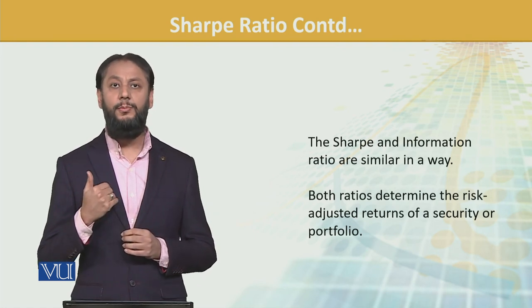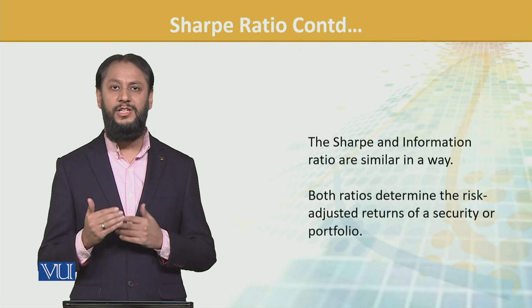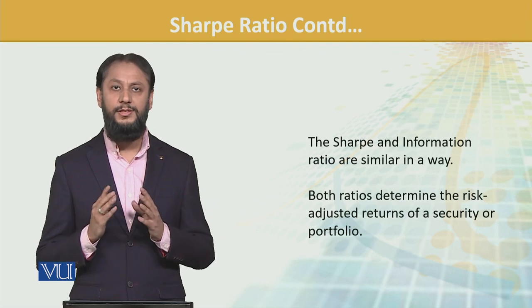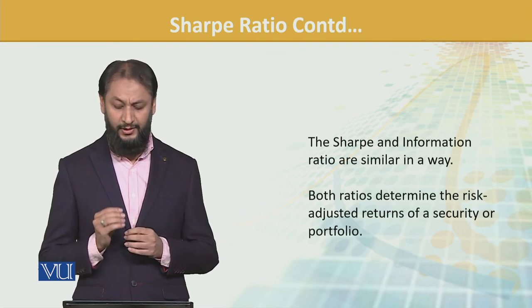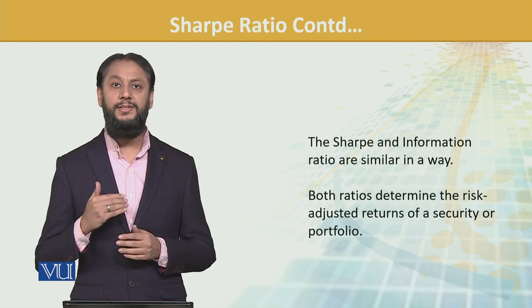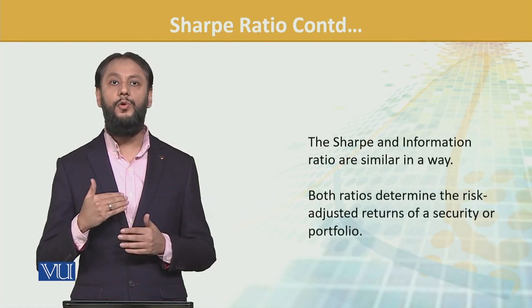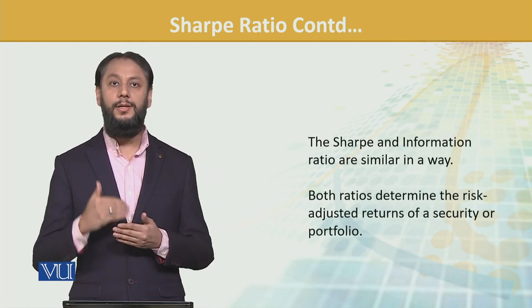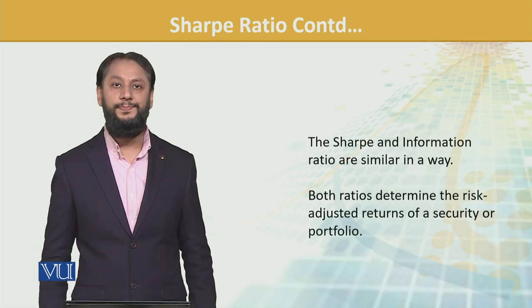Information ratio — हमने एक और जगह भी पढ़ी है, उसकी भी दोनों में similarity है. Both determine risk-adjusted return — मक्सद दोनों का risk-adjusted return है, कि over the risk हम कितना अच्छा return कमा रहे हैं. Thank you.